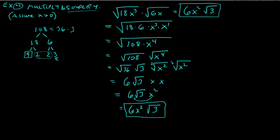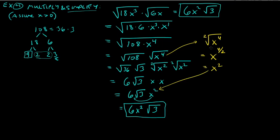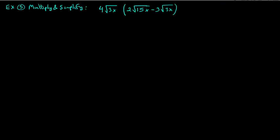Before moving on, let's do the square root of x to the fourth the other way. Because the index is 2, you can write it as x to the power 4 divided by 2, which is x squared. Either way you get x squared — both methods work.